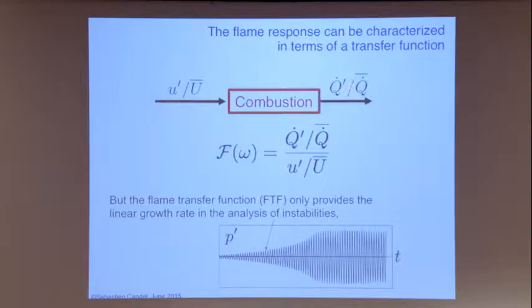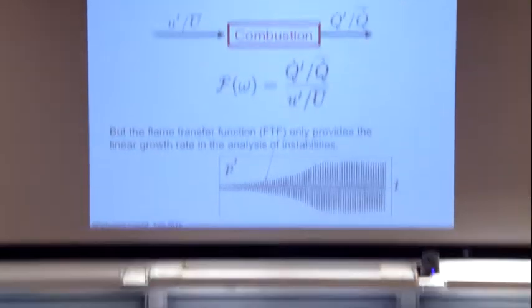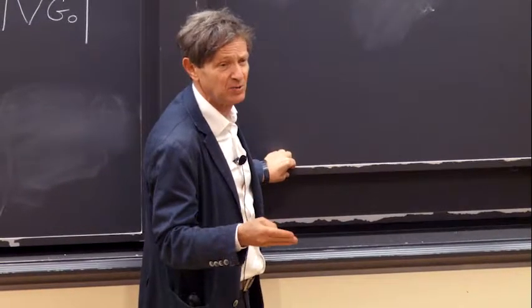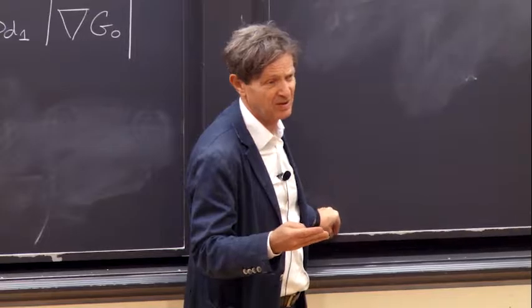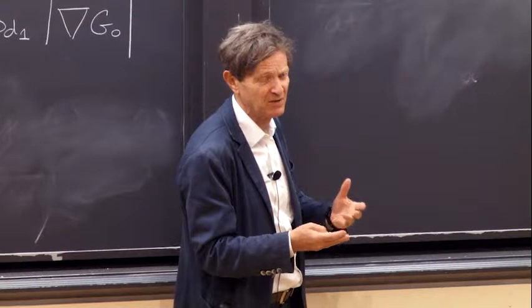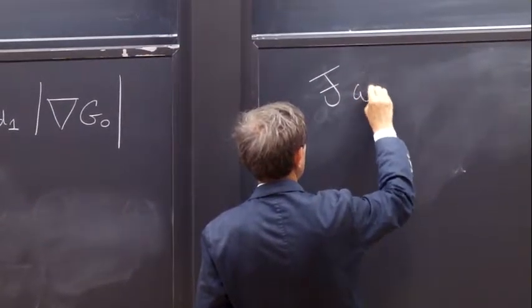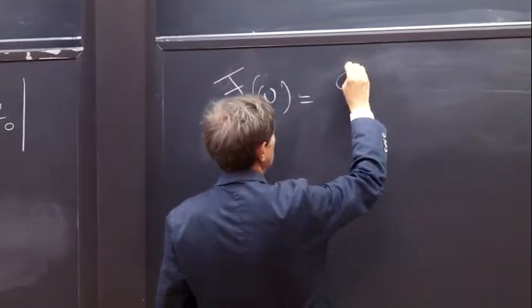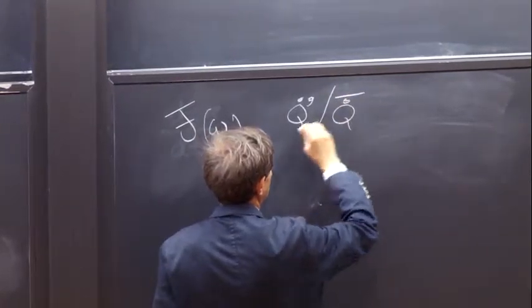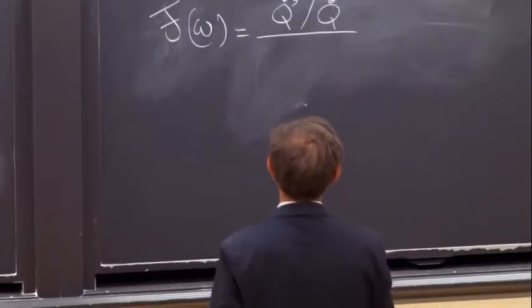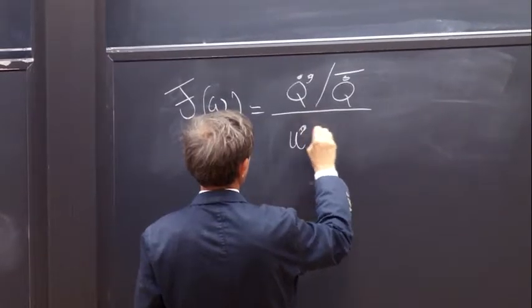We study that using this linear concept. The transfer function is given by a ratio. The ratio could be just the heat release divided by the velocity, but this would not be dimensionless. So it's better to use Q dot prime divided by Q dot bar — this is dimensionless — divided by U prime over U bar.